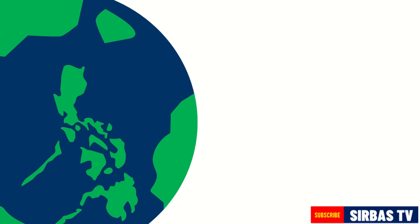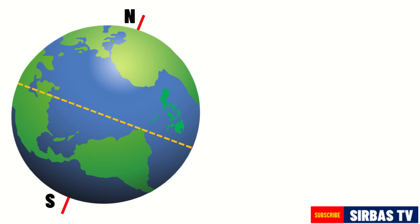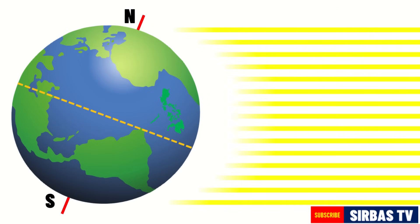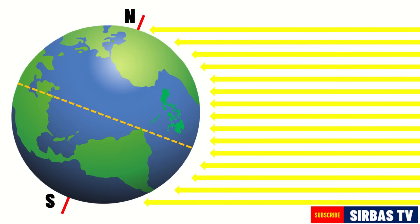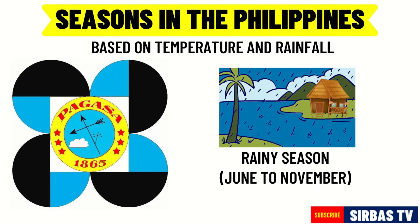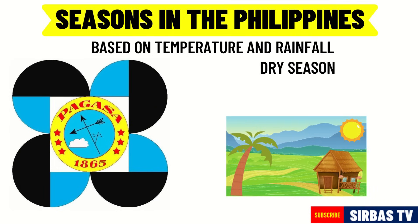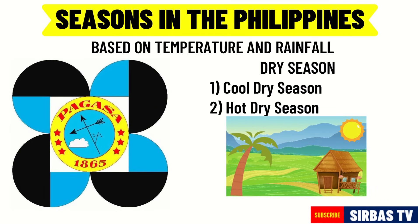In the Philippines, we only experience two seasons: wet and dry seasons. This is because the Philippines is located near the equator. The amount of sunlight that countries near the equator receive does not vary significantly throughout the year. According to PAGASA, or the Philippine Atmospheric Geophysical and Astronomical Services Administration, using temperature and rainfall as basis, the climate of the country can be divided into two major seasons: the rainy season from June to November and the dry season from December to May. The dry season may be subdivided into cold dry season and hot dry season.